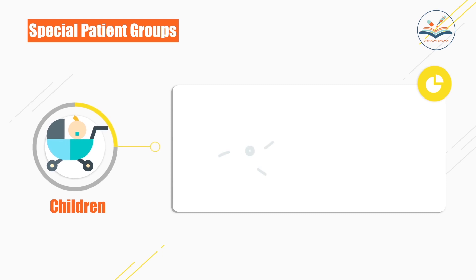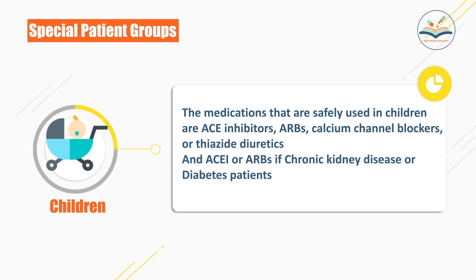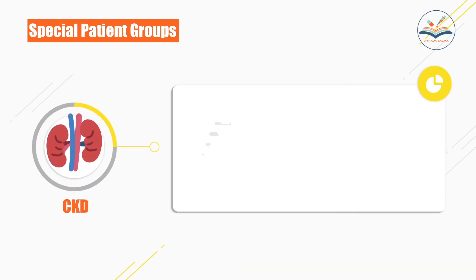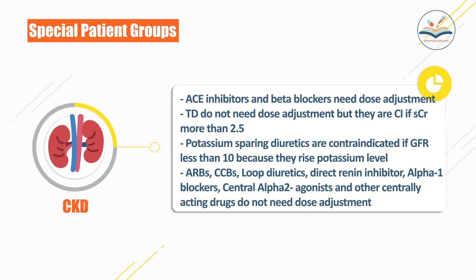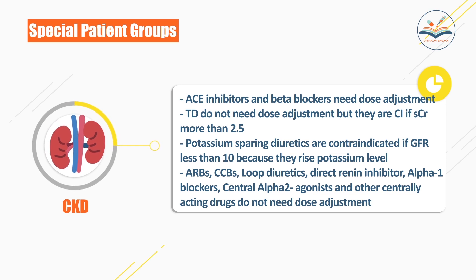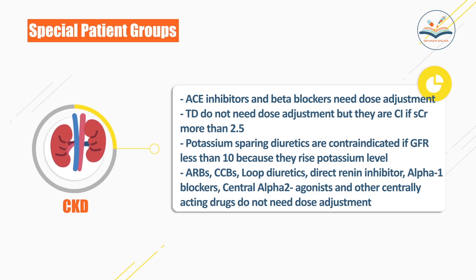In children, medications safely used include ACE inhibitors, ARBs, calcium channel blockers, or thiazide diuretics, and ACE inhibitors or ARBs if chronic kidney disease or diabetes is present. In chronic kidney disease patients, ACE inhibitors and beta blockers need dose adjustment. Thiazide diuretics do not need dose adjustment but are contraindicated if serum creatinine is more than 2.5. Potassium-sparing diuretics are contraindicated if GFR is less than 10.